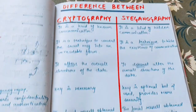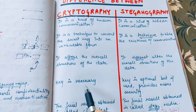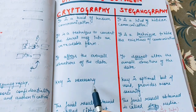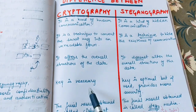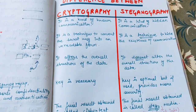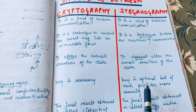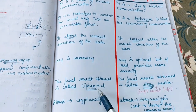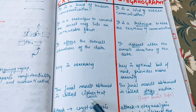The fourth difference: in cryptography, a key is necessary. Without a key you will not be able to do encryption or convert the message into an unreadable format — at least one key must be there. Whereas in steganography, we can achieve steganography without a key. If we have a key that is good, if we don't have a key that is completely fine — the key is optional. But if we do have a key, we will have more security.